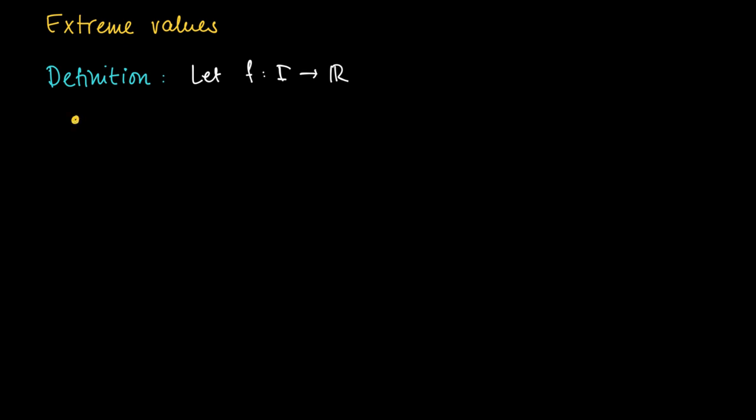So suppose we have a function f defined on some set I, that's a real valued function. Then we say that f has a global or absolute maximum in some value c. Global or absolute, it means the same thing - a global or absolute maximum in some c in I.